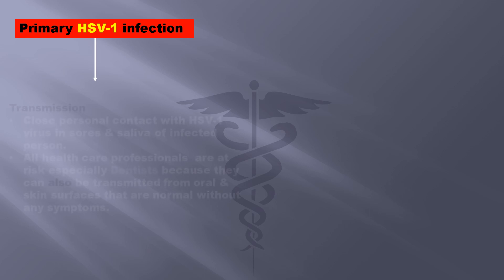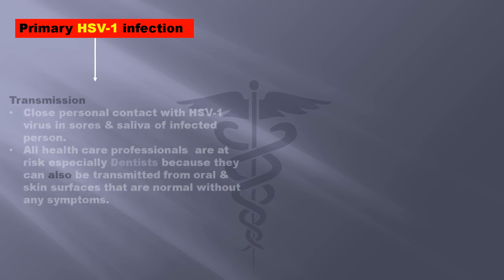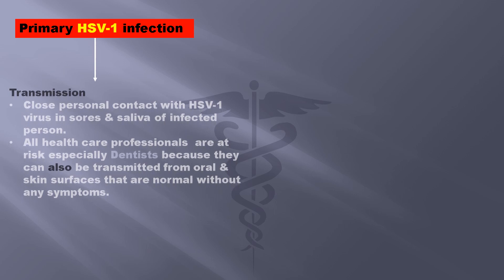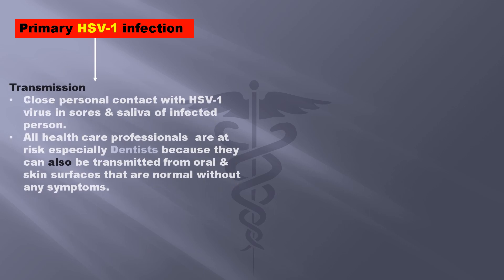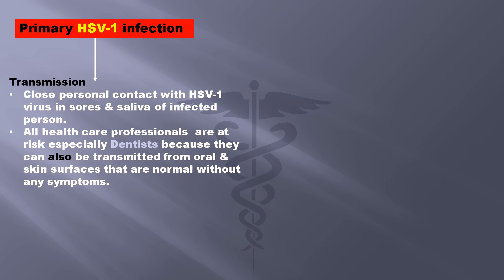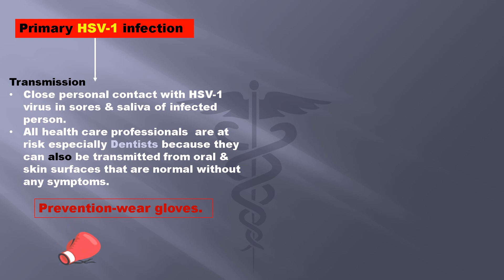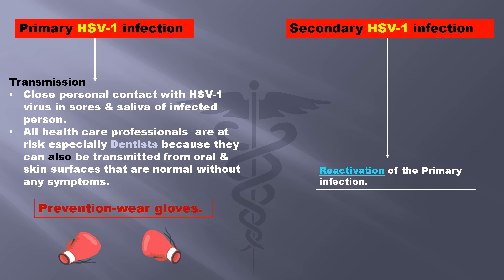In the primary infection, transmission occurs by close personal contact with HSV type 1 virus in the sores and saliva of an infected person. All healthcare professionals are at risk, especially dentists, because it can also be transmitted from oral and skin surfaces that appear normal without any symptoms. The best way of prevention is wearing gloves, especially if you have a skin cut or abrasion on your hands. The secondary infection by HSV type 1 occurs only on reactivation of the primary infection.